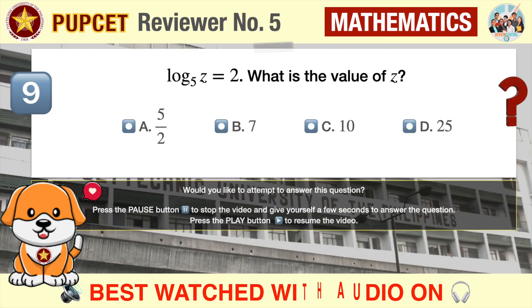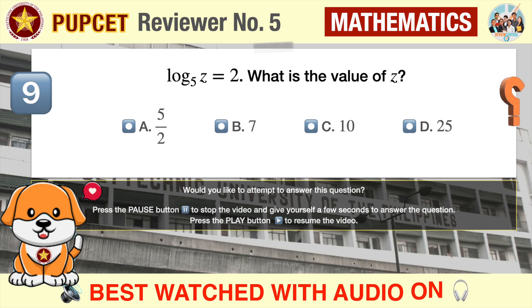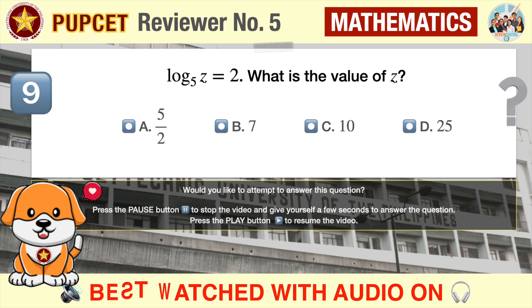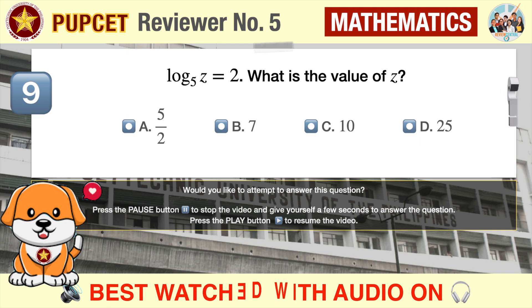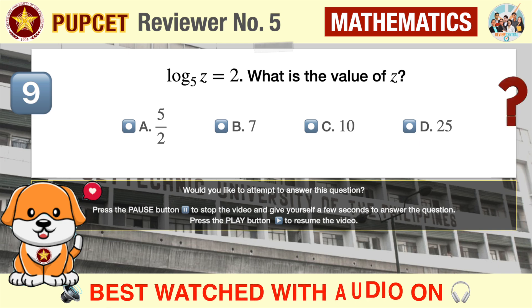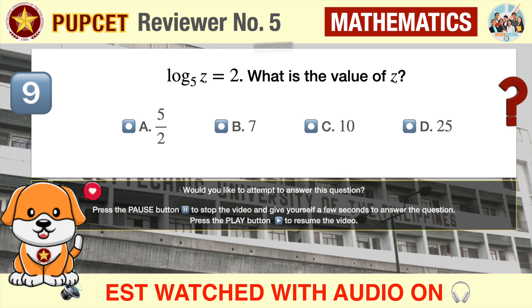Question number nine: logarithm base five of z is equal to two. What is the value of z? A) 5/2, B) 7, C) 10, D) 25.